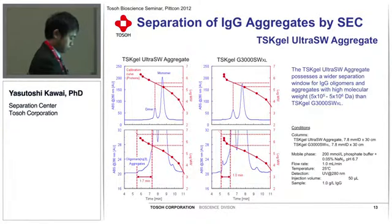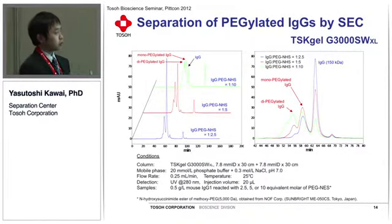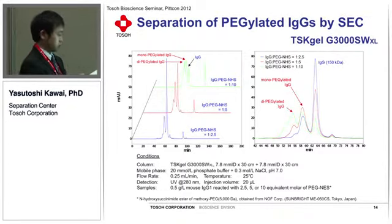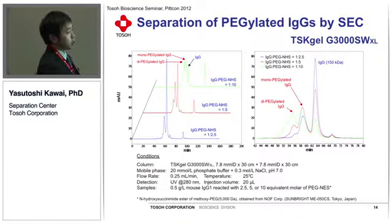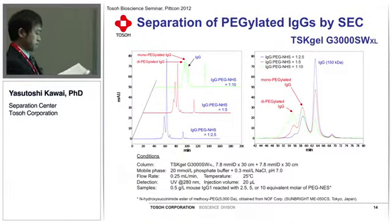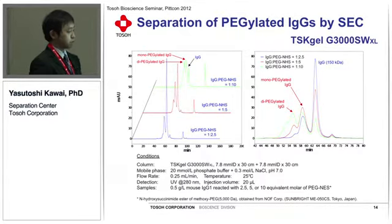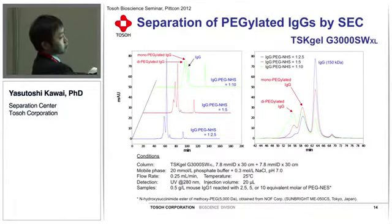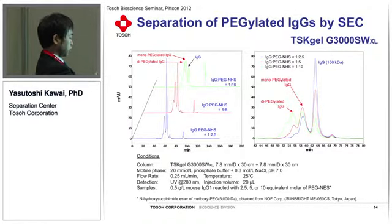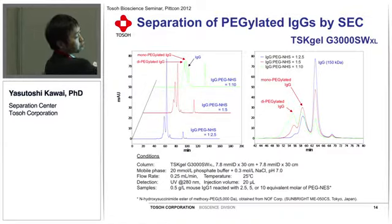I'd like to show one more example of SEC separation. This slide illustrates the separation of PEG-conjugated antibodies prepared with different antibody-to-PEG ratios. You find that mono-PEGylated species and di-PEGylated species were separated from the intact antibodies, as shown in the right figure.